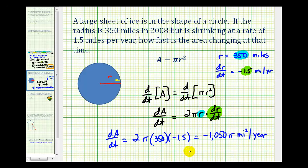Let's go ahead and get a decimal approximation as well. This would be approximately negative 3,298.7 miles squared per year.